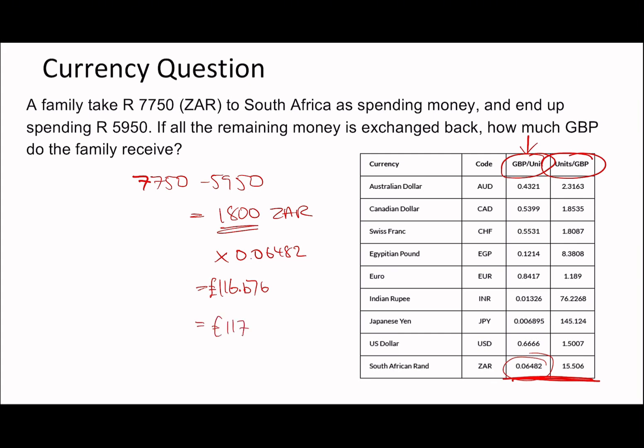That gives 116.676 pounds, so rounding to 117 pounds — that's how much the family receives. It's about working through methodically. You know the pound is stronger, so for 1800 ZAR you'll definitely get way fewer pounds. Numerically, 1800 ZAR won't give you more than 1800 pounds — it has to be less — and the only way to achieve that is to multiply by 0.06482.